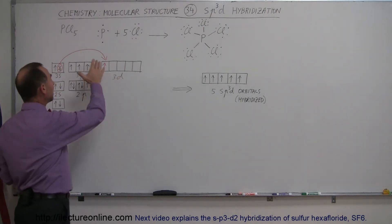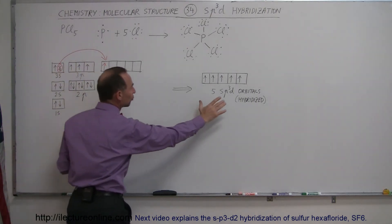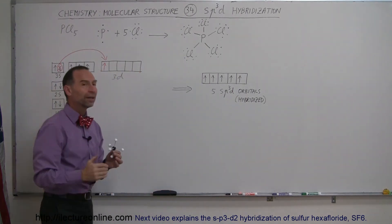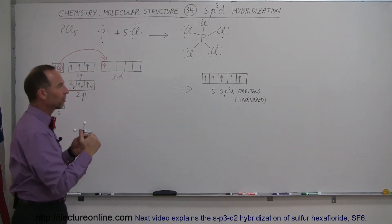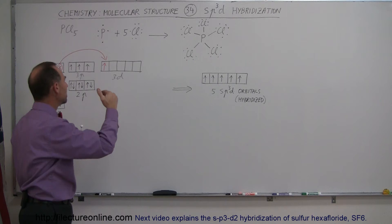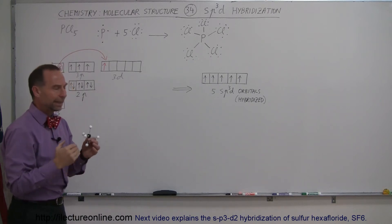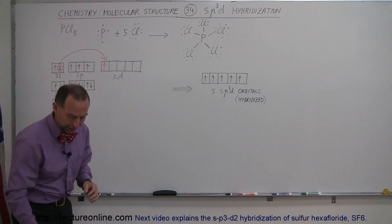What happens is the orbitals get hybridized into something what we name sp3d orbitals. They're all at the very same level. They're somewhere between the p and the d orbital level in energy.